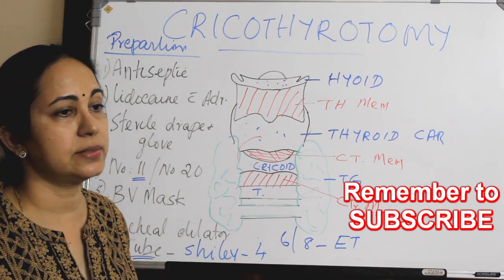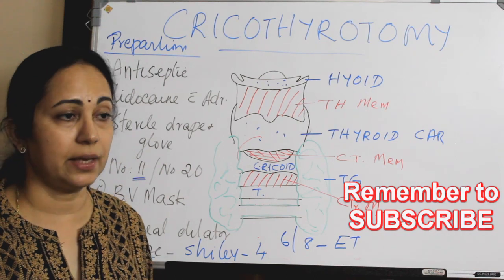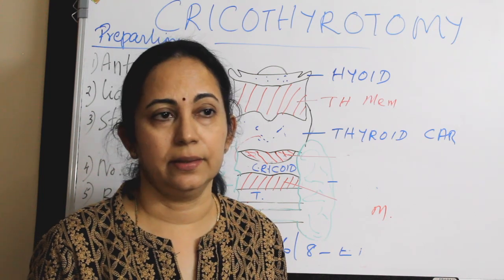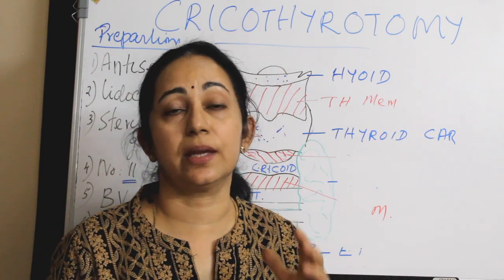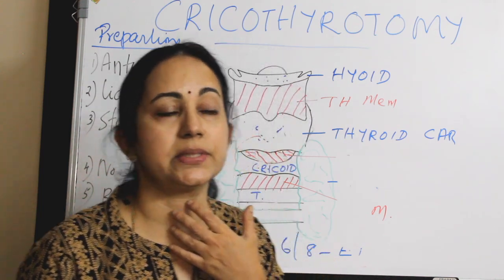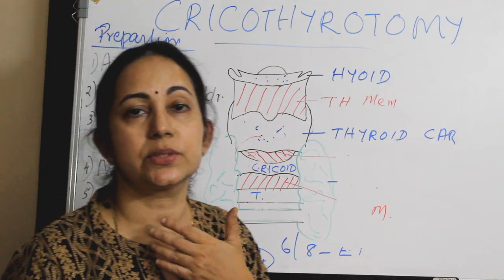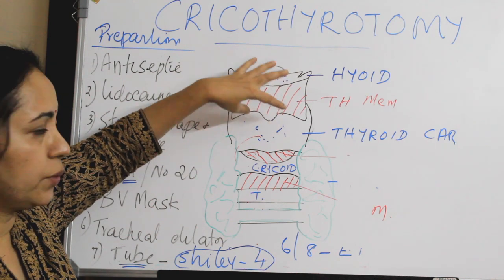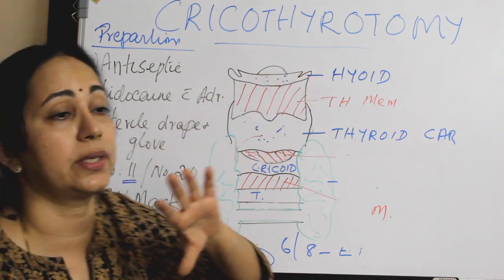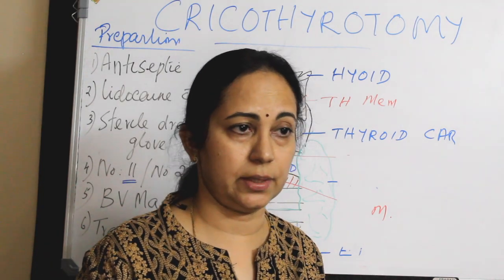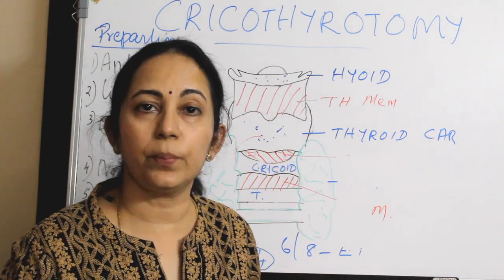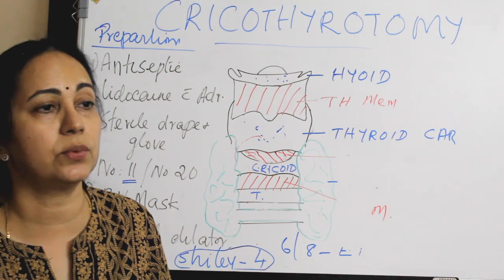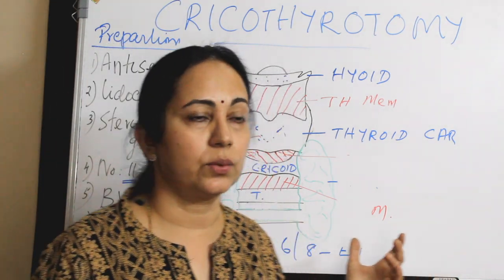You need an assistant. Patient position is similar to tracheostomy — supine with the neck extended by placing a sandbag or pillow under the shoulders and using a head ring. Apply antiseptic solution, make the area sterile, and apply drapes. Then identify the thyroid and cricoid cartilages — this is the most important step. In obese patients, palpatory identification can be very difficult; in that case, use ultrasound guidance to identify the cricothyroid membrane.